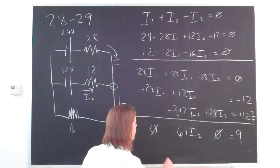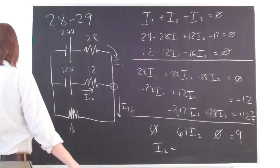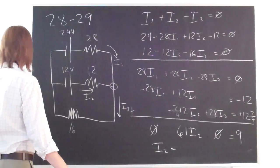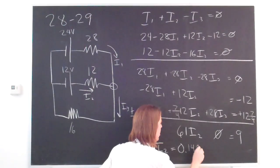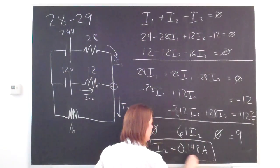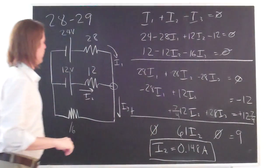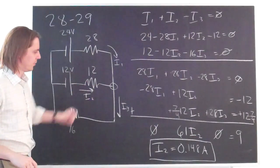So I2 equals 9 over 61, which is 0.148 amps. So there we have solved for one of the currents. So we went ahead because mathematically it was easiest to solve for I2.